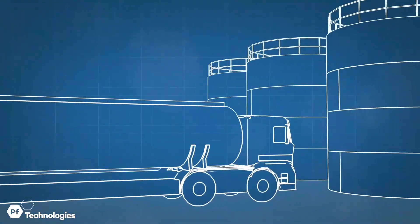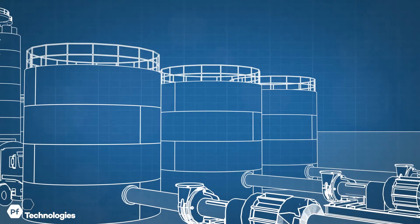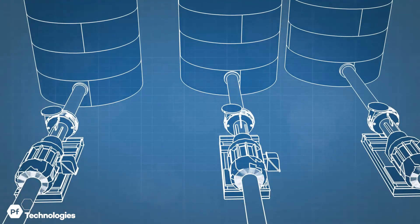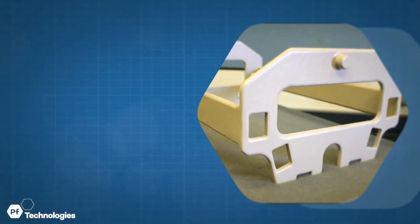We line the tankers to transport them. We build the tanks to store them. Line the pumps and vessels that distribute them. And coat wafer carriers that keep the silicon safe.